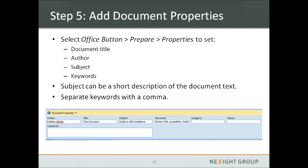Fifth, you want to add document properties: the title, the author, the subject, and any keywords. Select the Office button, hit Prepare, then Properties to enter this information. The subject can simply be a short description, and each keyword should be separated with a comma.